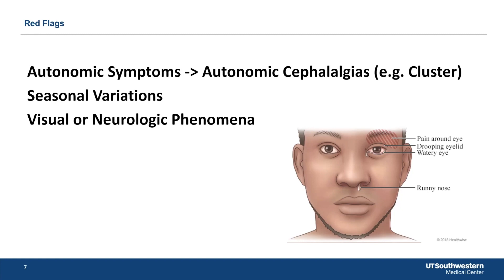It's important to get the seasonal variations — the classic definition of cluster headache is that it clusters at a certain time of year with a lot of attacks, followed by pain-free weeks or months. Also document any visual or neurological phenomena, which may indicate a migrainous type of pain rather than trigeminal neuralgia.